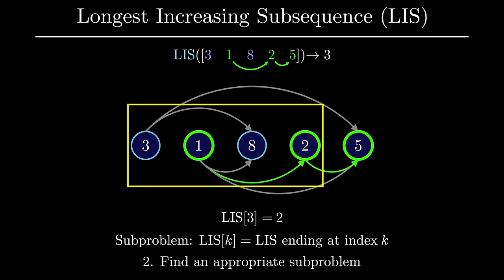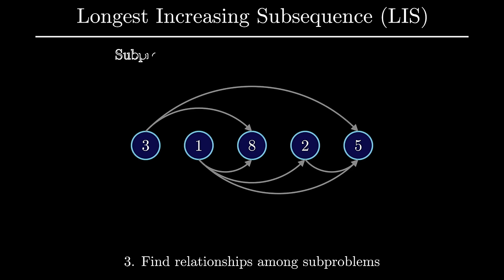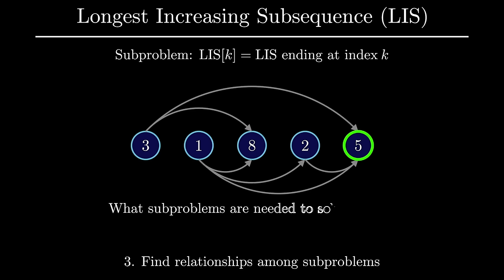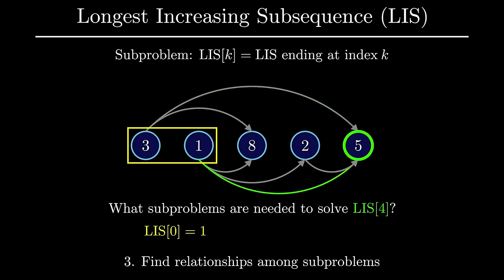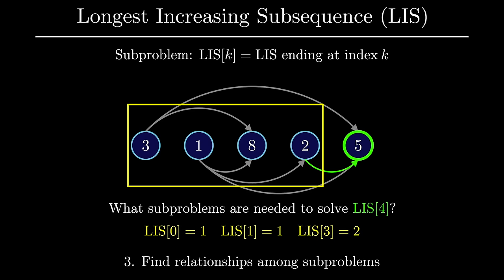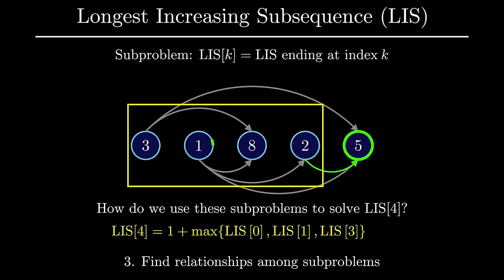Now that we've identified a possible subproblem, the third step requires finding relationships among subproblems. Suppose you want to solve the subproblem of finding the longest increasing subsequence ending at index 4. One path through index 4 must go through index 0, giving a subproblem length of 1. Another path comes through index 1, also with length 1. The final possible path goes through index 3, whose LIS has length 2. The length of the LIS ending at index 4 is then 1 plus the max over all necessary subproblems, which ends up being 3.